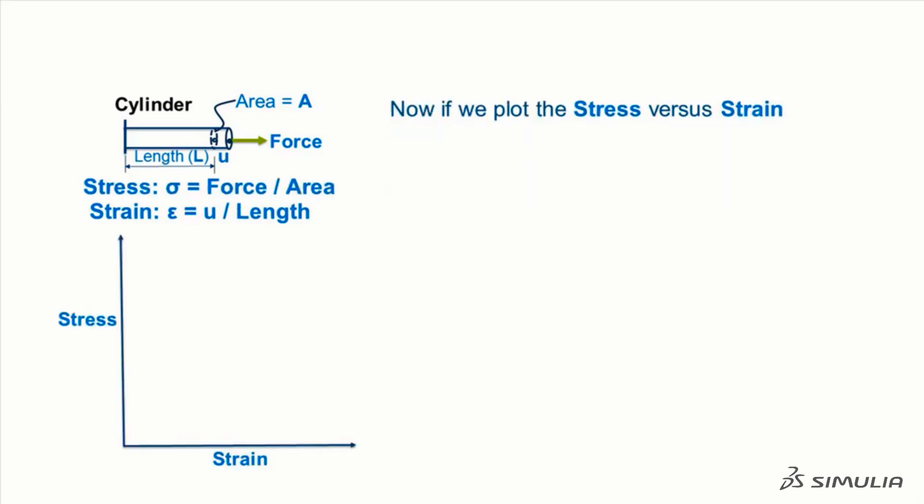Now, if we plot the stress versus strain, we again generate a straight line. The slope of this line is the elastic modulus and is symbolized by the letter E.